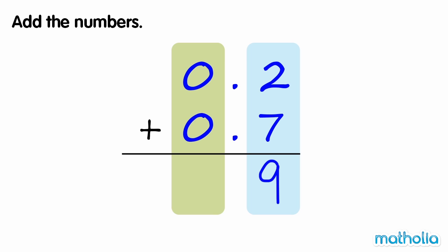Remember to write the decimal point. Next, we add the ones. There are no ones in the ones column. So 0.2 plus 0.7 equals 0.9.